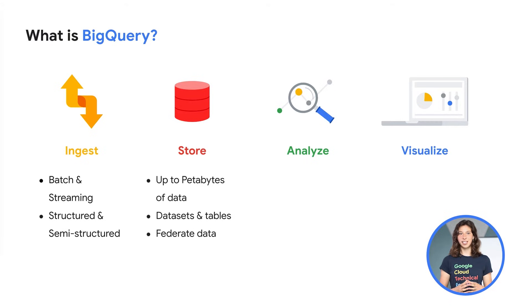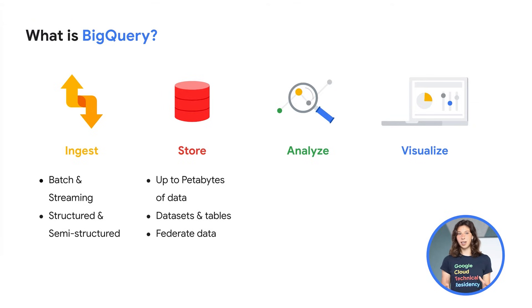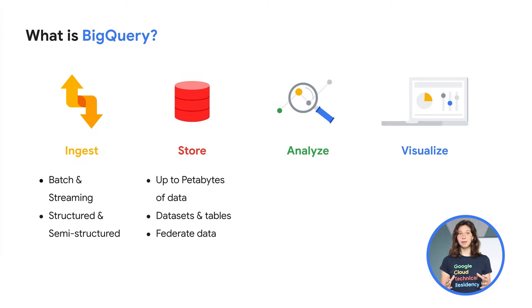With BigQuery, you can store massive data sets up to petabytes of data in a structured tabular format. There are two different objects to notice in BigQuery: data sets and tables. Tables will be your usual data in tabular format, and data sets will regroup those tables as folders. To avoid storing duplicates of data, you can also federate BigQuery with other Google Cloud databases such as Cloud Storage, without copying the data in BigQuery storage, but simply making a connection between products.